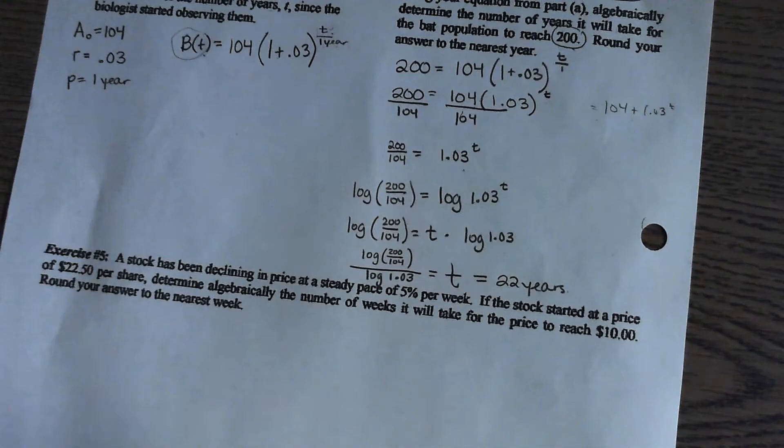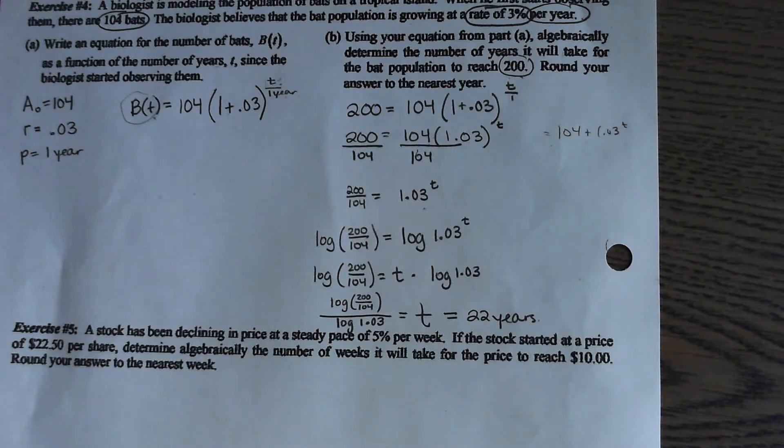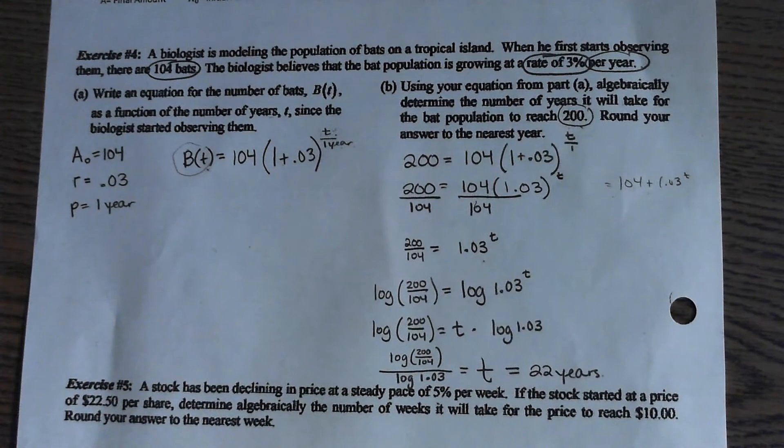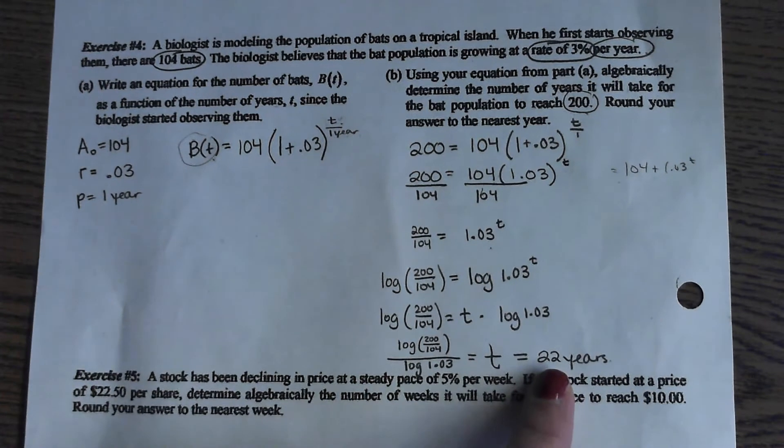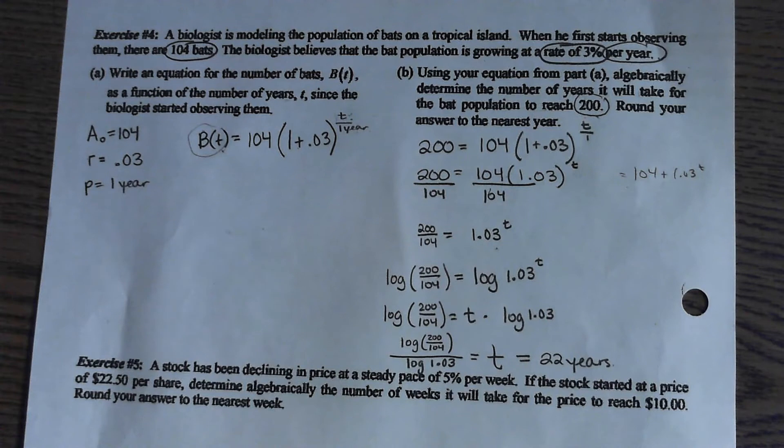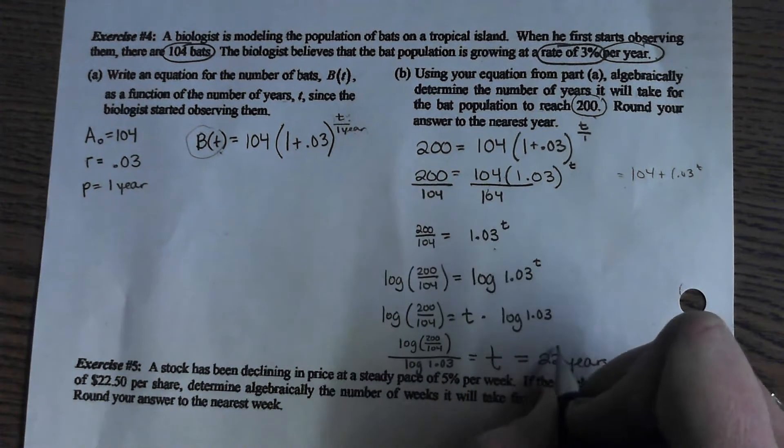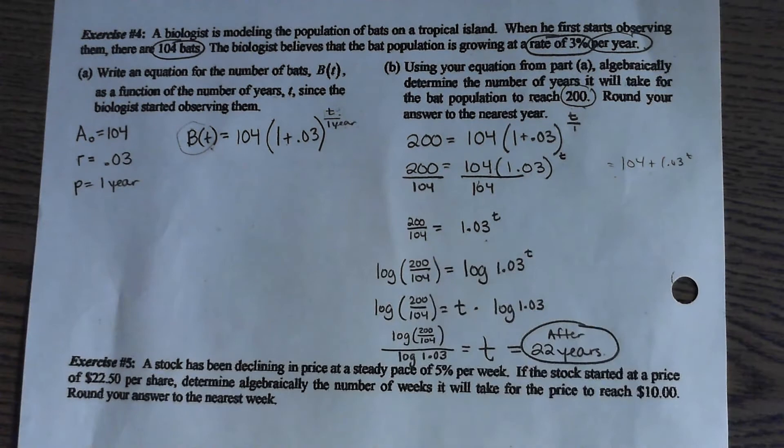That wasn't the question, though. They didn't say how many years did it take, so this is just a formality. They said what year did it finally reach 200? And did they give us a starting year? Maybe that is, sometimes they'll say that this whole model, like the 104 bats, was the year 2000. And so in what year would be the year 2022? But they didn't actually give us a starting year, so the best we can do is say after 22 years. Sometimes they'll say that the model started in 1990. So if you get 22 years of, like, waiting, you just have to figure out what year that is. 1990 plus 22 years. Good?